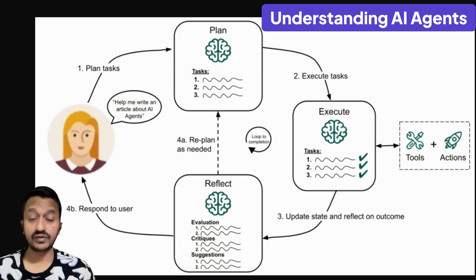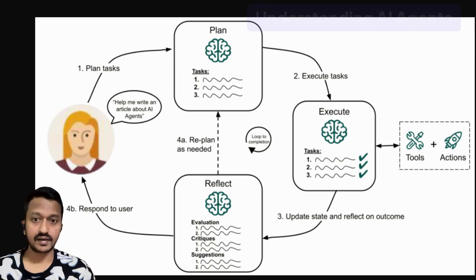And then the fourth step is re-planning as needed. Based on the reflection, the agent may decide to re-plan and make adjustments to the original plan so that the whole task is completed properly. So this is a simple AI agent workflow.